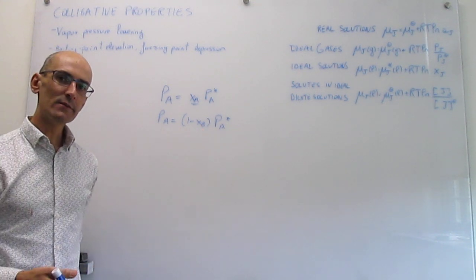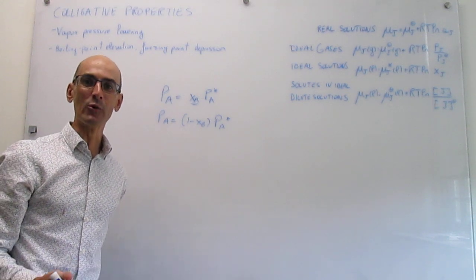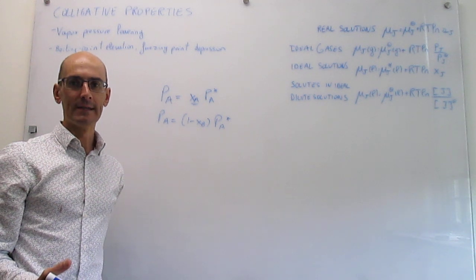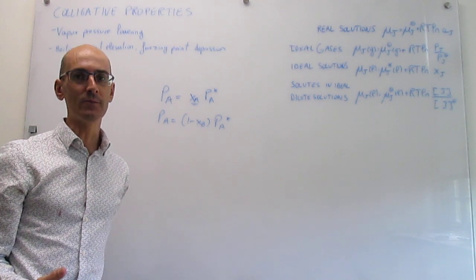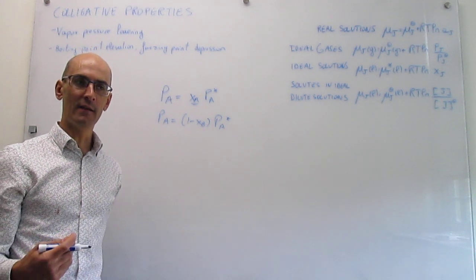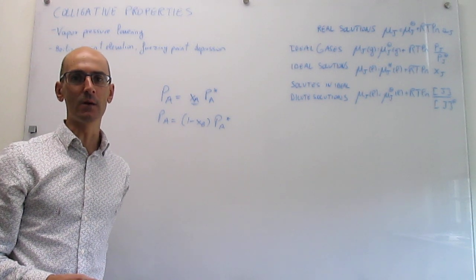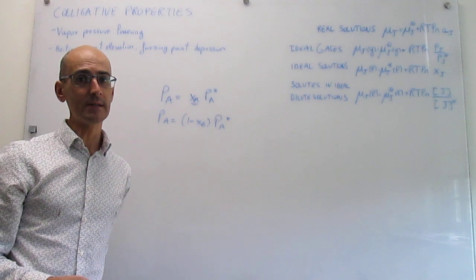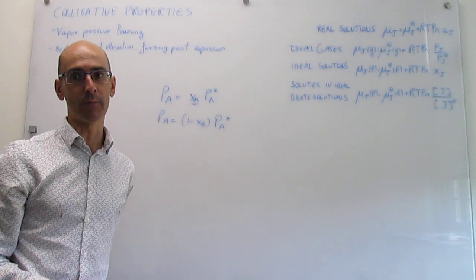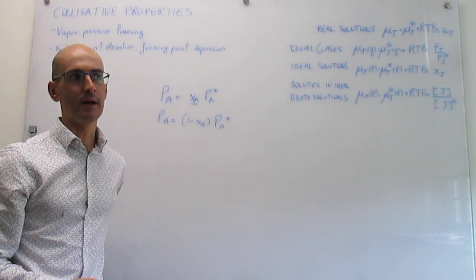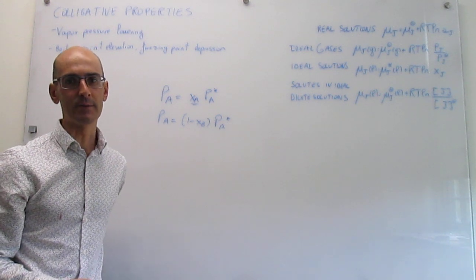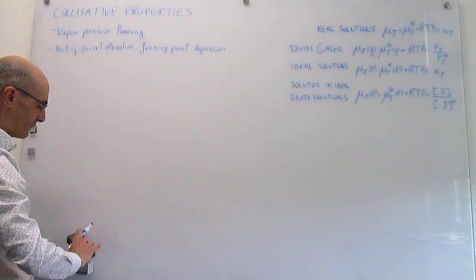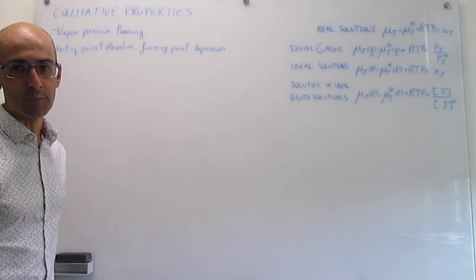There are other types of colligative properties that we're going to see. In this video, we're going to introduce boiling point elevation and freezing point depression, and then we'll develop those a little bit more in the next video. We will conclude with perhaps solubility and ideal solubility, and also osmotic pressure, which is a textbook colligative property. But for now, let's focus on boiling point elevation and freezing point depression.